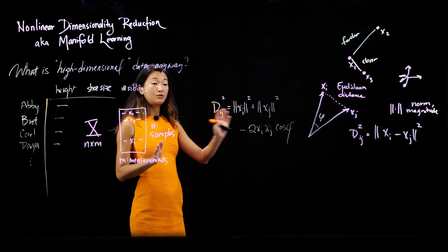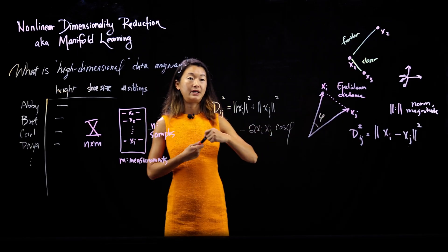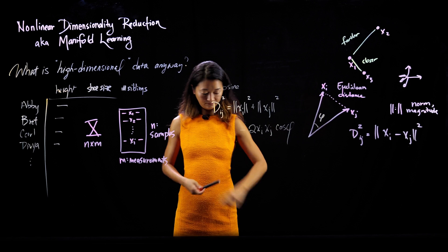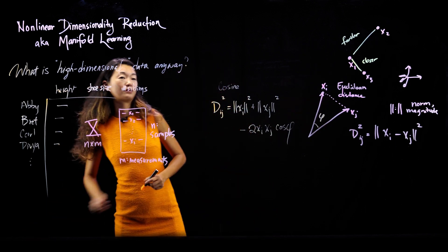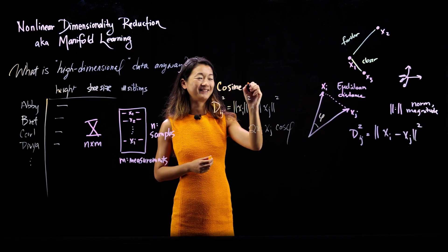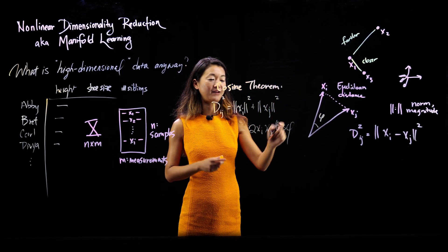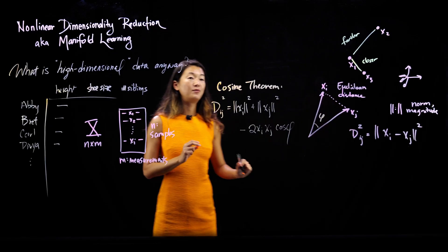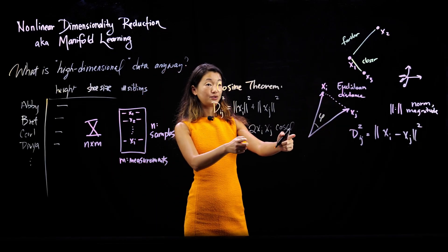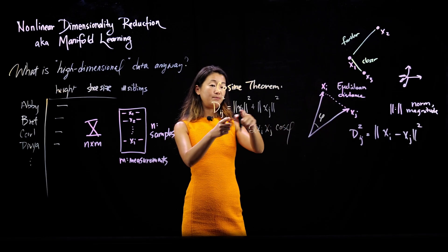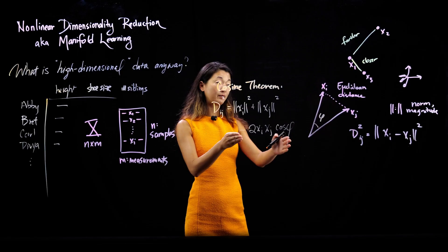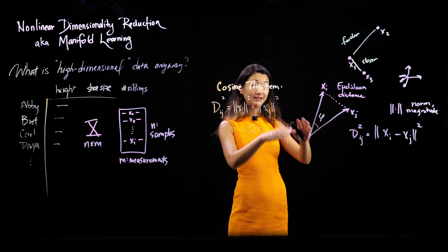Now there's a reason that I've rewritten the formula in this way by using the cosine theorem. So I have this equivalent formula here. And what this gets me is this notion of the dot product between the two things,